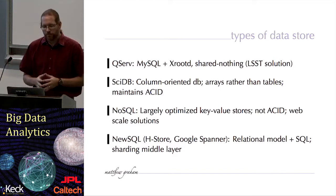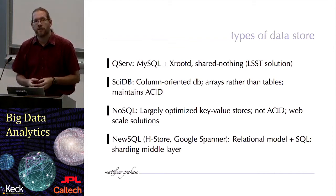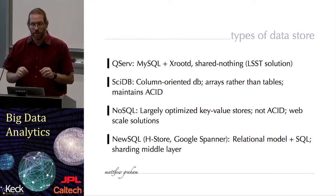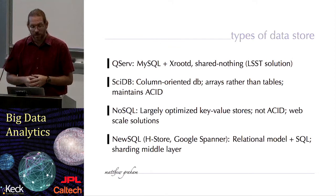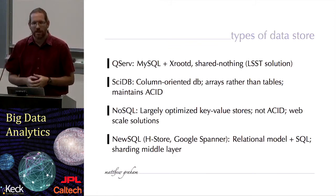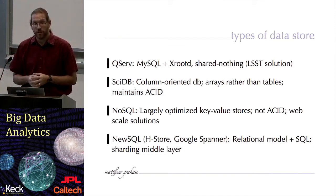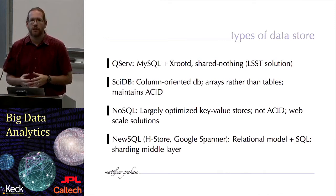Moving away from relational databases, there's the SciDB project — a column-oriented database. Column-oriented databases are essentially a 90-degree rotation of a relational database: it's the column which is the important thing, not the row. Instead of using tables as its first-order data type for storing, it's based around the idea of numerical arrays. This makes it a very good database for large amounts of numerical or scientific data. It has substantial industry backing, and it also maintains ACID.